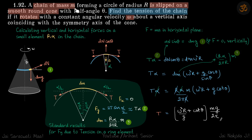We have a chain of mass M that is slipped on a smooth round cone. We need to find the tension of the chain if the whole system is rotating with an angular velocity of omega. Whenever we need to find the tension in a chain, it's always best to do it by taking a small part of the chain and find the forces on that small part. So let's take a small elemental part of this whole chain and figure out the forces on that.